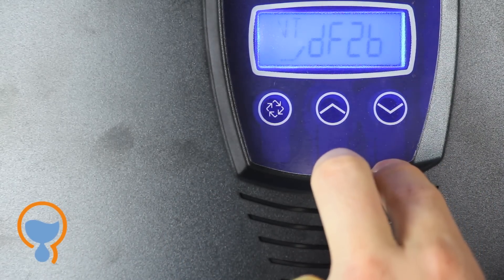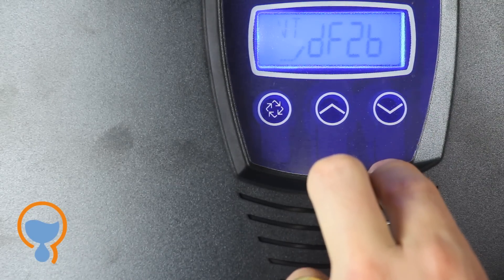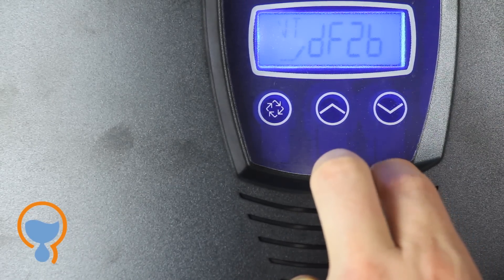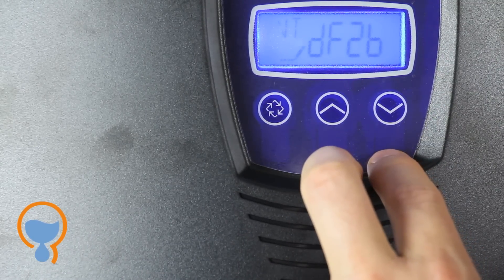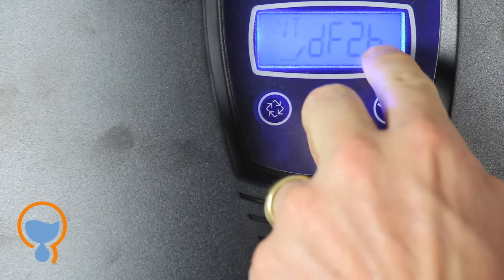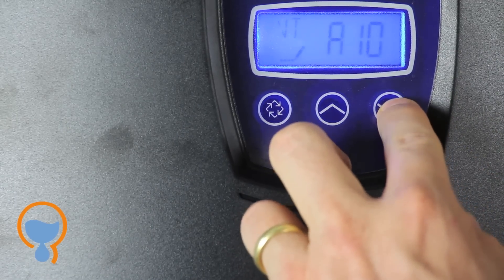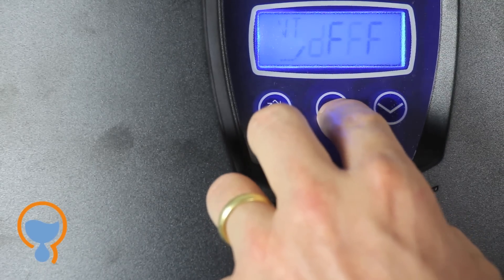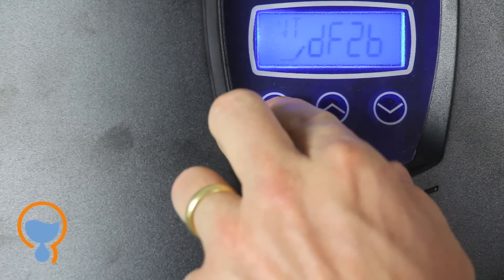Next thing is the downflow or upflow configuration. For the Flex 7000 SXT we're going to use the downflow DF2B settings. You can scroll through here. You see there's a bunch of different settings, but we want the DF2B setting. We'll press enter.